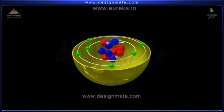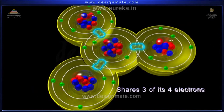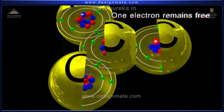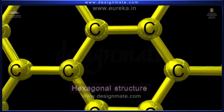In graphite, out of the 4 valence electrons of carbon, it shares 3 electrons with 3 other carbon atoms, while one electron remains free. This forms a hexagonal structure.